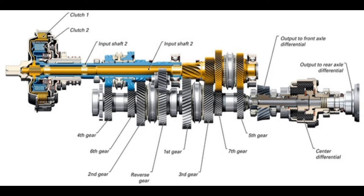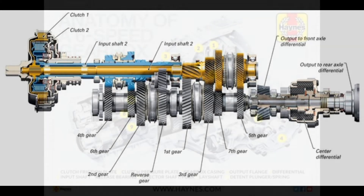Why do we need a gearbox? The need for different torque and different speed due to the continuous change in road conditions has led to the development of an intermediate device that can provide different speed or gear ratios in order to keep the vehicle moving. When a car starts, the torque provided by the engine output shaft is not enough to overcome the weight of the vehicle, which makes it difficult to move the car initially. So to solve this problem, a gearbox is required which can provide high torque initially in order to move the vehicle.